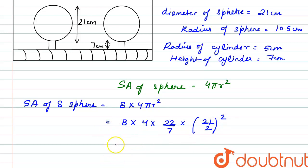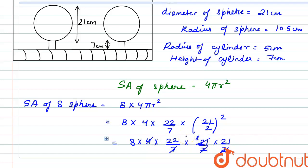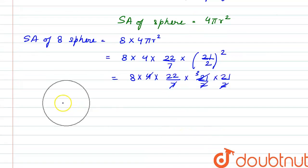So we can also write this as 8 into 4 into 22 by 7 multiplied by 21 by 2 multiplied by 21 by 2. So 2 and 2 cancels out 4, 7 divides 21, so we have 3 here. So we have the value of surface area of 8 spheres as 11,088 cm².